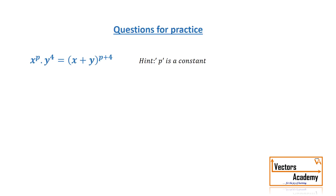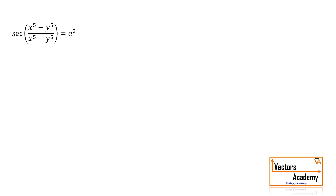You can try similar questions on your own. Now let's look at a more complicated question: sec of x raised to 5 plus y raised to 5 upon x raised to 5 minus y raised to 5, is equal to a square. The left hand side is quite complicated, whereas the right hand side is simply a square, which is a constant.